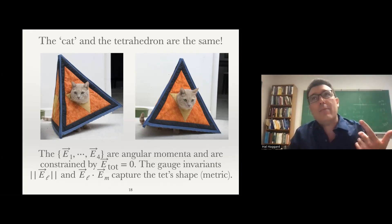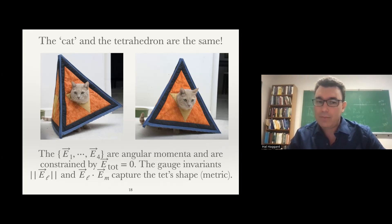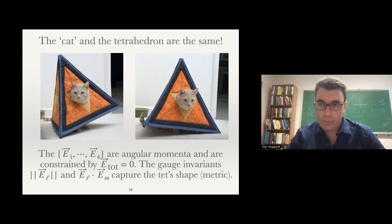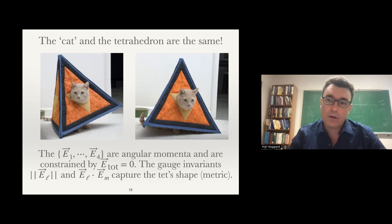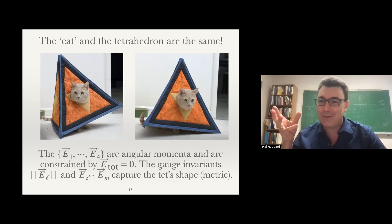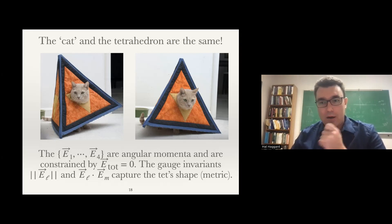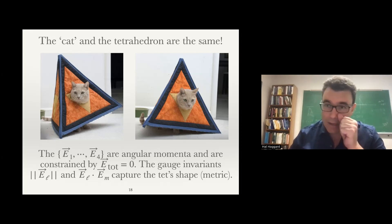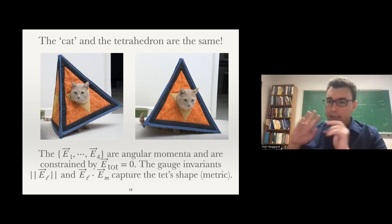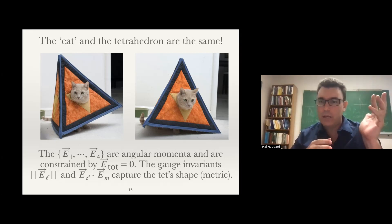This furnishes an interpretation of the closure we found. The gravitational Gauss law tells us the electric flux vectors of a tetrahedron sum to zero. That sum generates a rotation of all the vectors. But rotating all vectors doesn't change the shape of the tetrahedron — it only changes how it's oriented in space. So this is gauge — exactly like the cat's orientation — these rotations change orientation but not the gauge-invariant geometry. The tetrahedron and the falling cat are the same system: angular momenta adding up to zero, exactly as we saw for the cat released from rest.